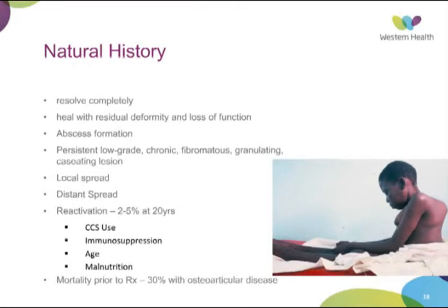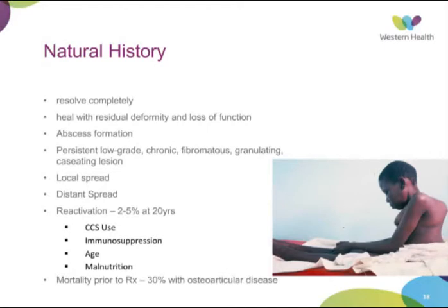HIV immunosuppression is a key trigger for reactivation — people who had TB in the past can contract HIV and have it reactivate. The mortality associated with TB prior to treatment was approximately 30% for those with osteoarticular disease. Differential diagnoses to consider include seronegative arthropathic disease, tumours, and other granulomatous infections such as atypical bacteria, fungi, and spirochetes. TB should always be on your radar when you're unsure what's going on with a potentially infected patient.